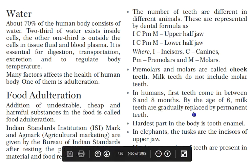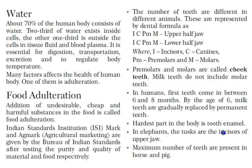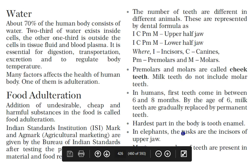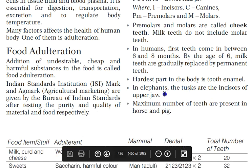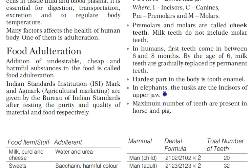Milk teeth are gradually replaced by permanent teeth by the age of 6. The hardest part of the body is tooth enamel — this is a frequently asked question. In elephants, the tusks are the incisors of the upper jaw, not canines as commonly thought.